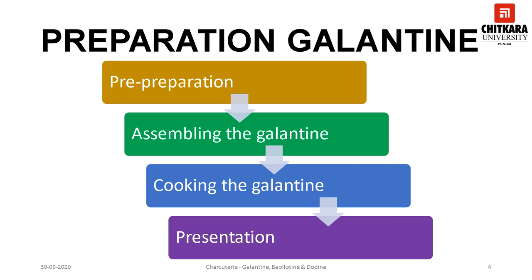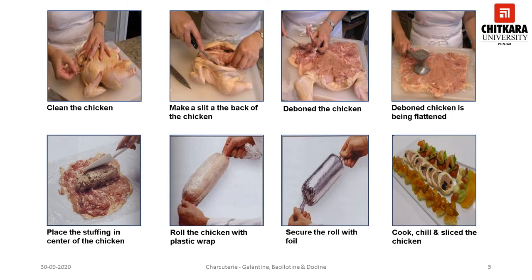Now it can be presented. Traditionally, galantines are sliced and served with small cubes of delicate aspic. This slide illustrates the steps involved in the preparation of galantine with pictures: clean the chicken, make a slit at the back, debone the chicken, flatten the deboned chicken, place the stuffing in the center, roll the chicken with plastic wrap or cheesecloth, secure the roll with foil paper, cook and then chill. The galantine is now ready and can be sliced and served with appropriate garnish.